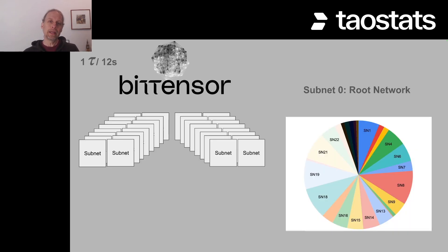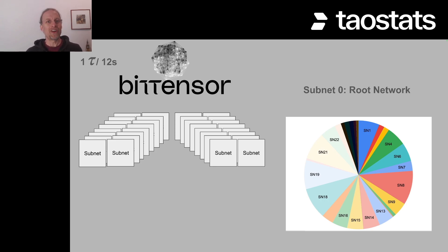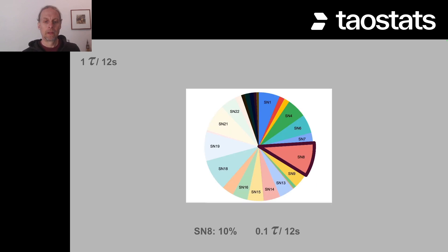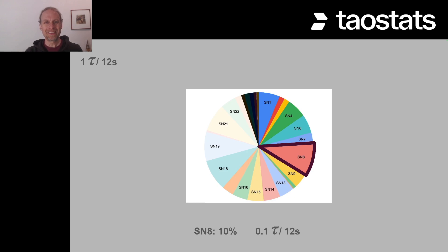The first part is that one TAU has to be divided amongst all 32 of the subnets, and that's decided by subnet zero, the root subnet. We've got a pie chart — 100% gets distributed amongst the subnets and everybody gets a slice of the pie. For our example, I'm going to say subnet eight gets 10%, making the math easy: 10% of one TAU every 12 seconds is 0.1 TAU.